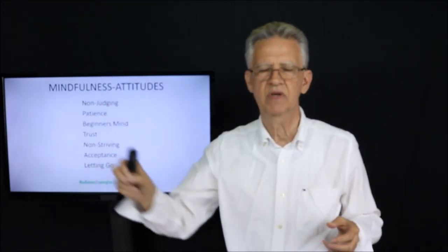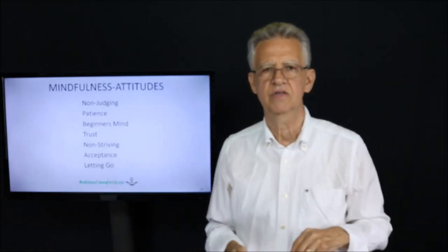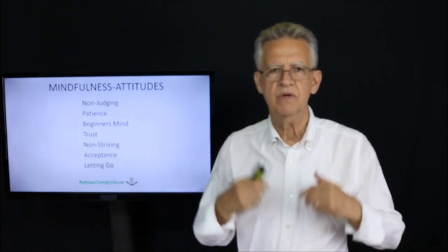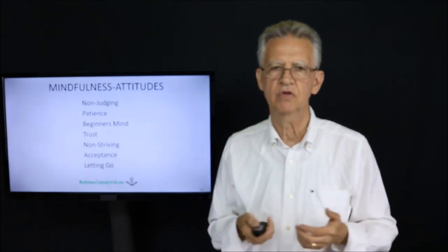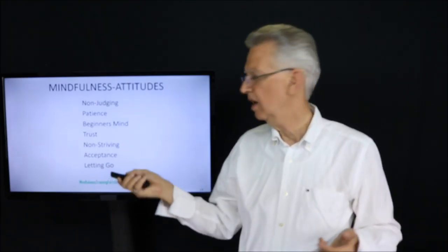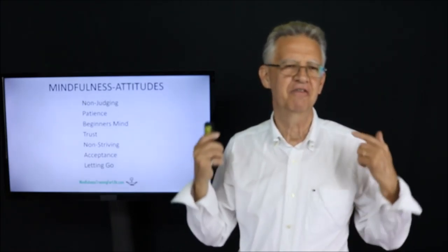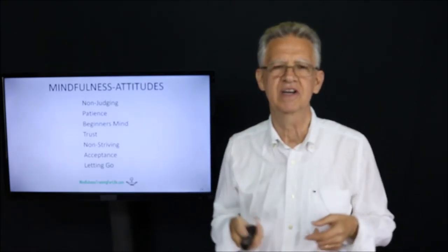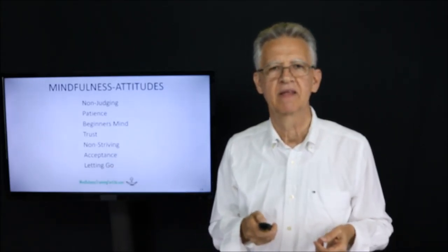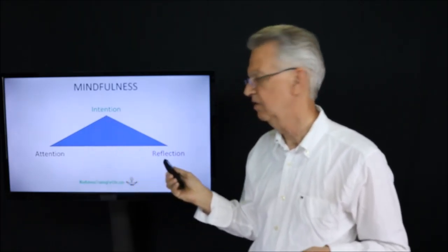Trusting in our own inner wisdom that we'll be able to work with this. Non-striving, not trying to get something. Acceptance of what's here. It's already here, so I have a choice. I can resist it or I can accept it. And then letting go. Letting go tends to be the most challenging thing for the mind. Research indicates this is the most challenging thing for the brain to do. This is the mindfulness triangle: attention, intention, and reflection.